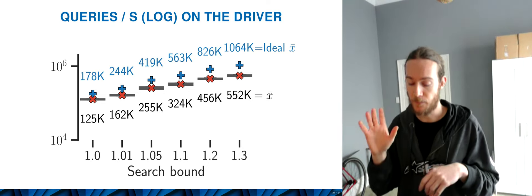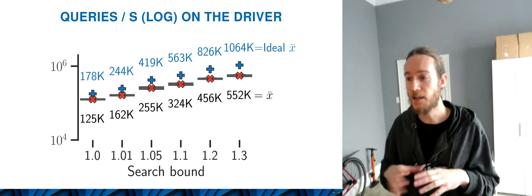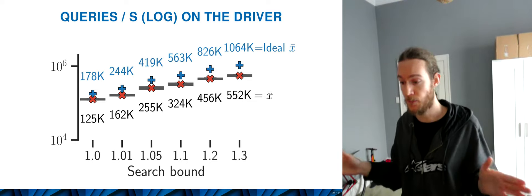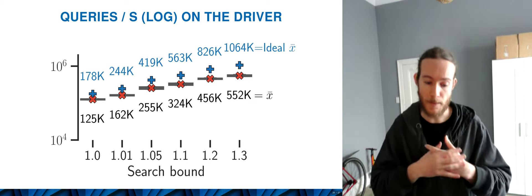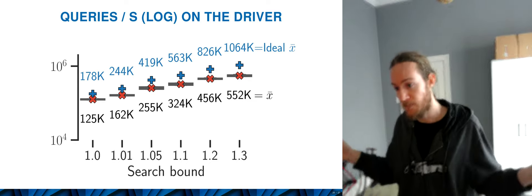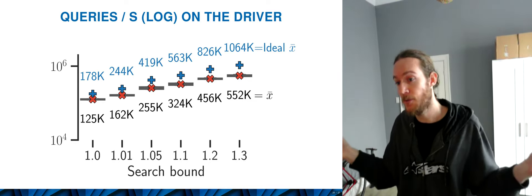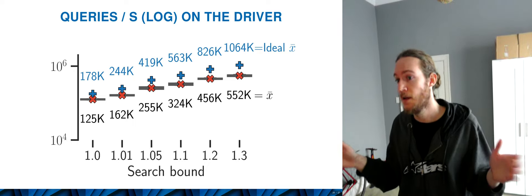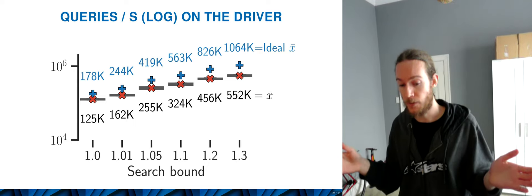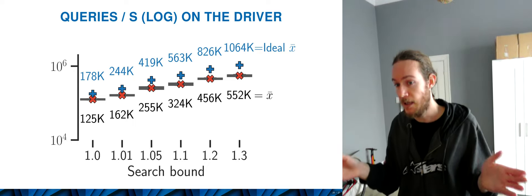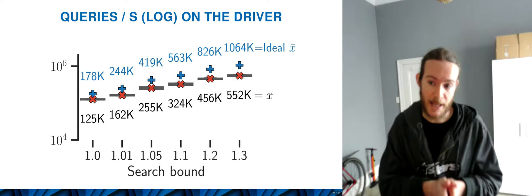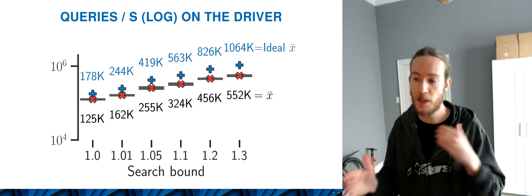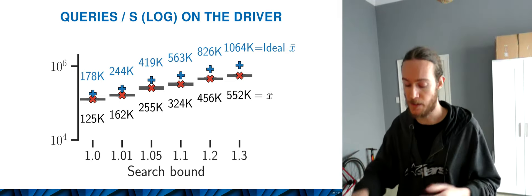I'm talking about routing the entire 650,000 query set on the cluster. If we had only 10,000 queries, these overheads would be even higher. We need to be able to balance these things out.